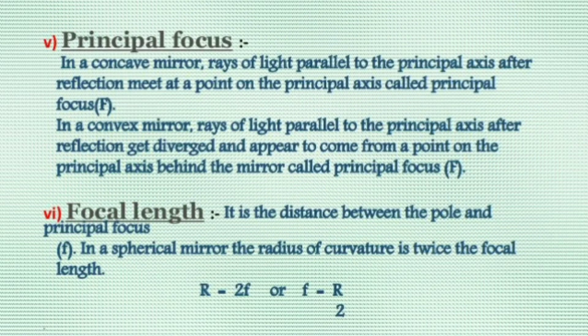Next is principal focus. In a concave mirror, rays of light parallel to the principal axis after reflection meet at a point on the principal axis called the principal focus. In a convex mirror, rays of light parallel to the principal axis after reflection get diverged and appear to come from a point on the principal axis behind the mirror — that point is called the principal focus.